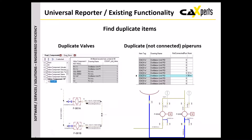In the chapter about finding duplicate items, I'm going to show two examples. The first example will allow you to find duplicate valves and eventually display them on the PID so that they can be changed and modified. Another important topic is that in the PIDs it's not so easy to identify if you have duplicate item tags which are graphically not connected. This is why we have introduced an attribute called 'not connected run'. If it displays a value different than zero, it means that this pipe run has some graphical connectivity problem.